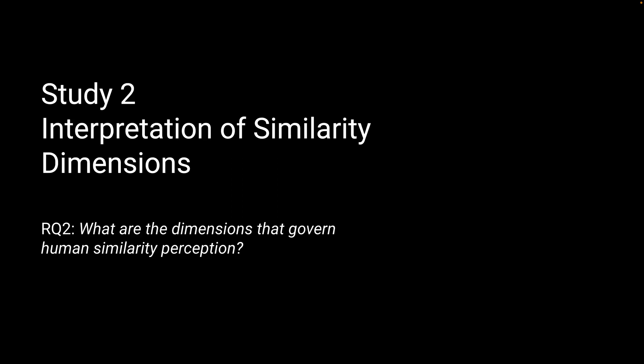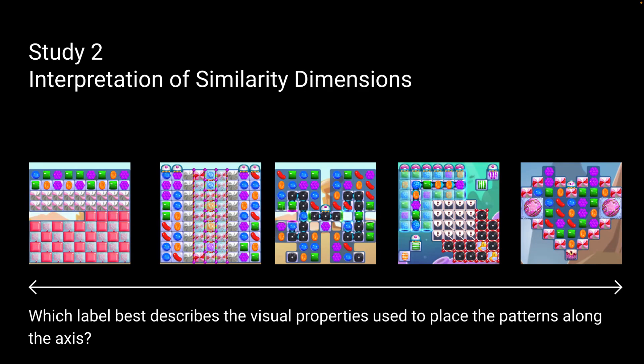We gave our participants these types of examples of dimensions of the embedding, and we wanted to know which label best describes the visual properties used to place the pattern along the axis.